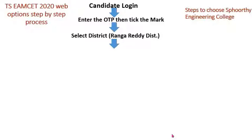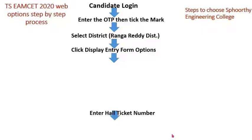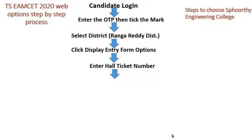The third step is to select the district. If you want to select Spurthy Engineering College, you need to select Rangareddy district. The fourth step is to click the 'Display Entry Form' option. Once you select Rangareddy district, click on 'Display Entry Form'.